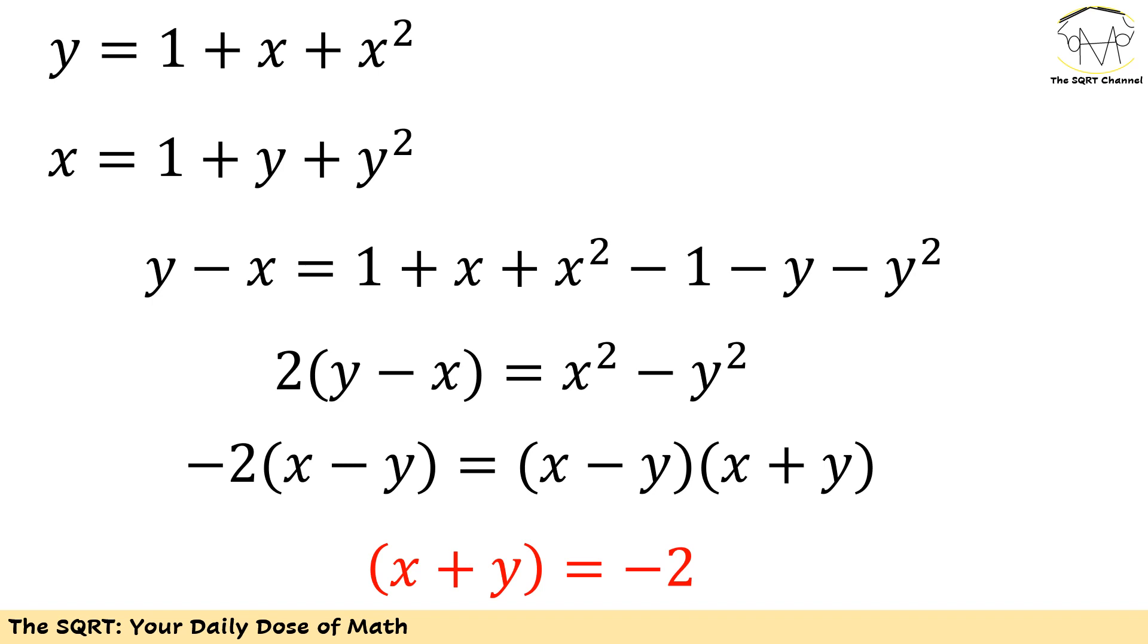This basically means that first of all I'm going to rewrite x squared minus y squared as x minus y times x plus y and then remember we didn't want to have x and y equal so I can remove x minus y here and then x plus y is going to be negative 2.